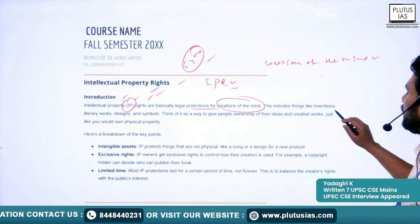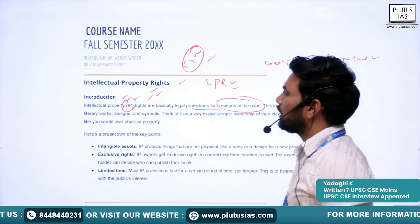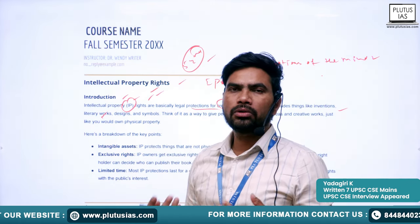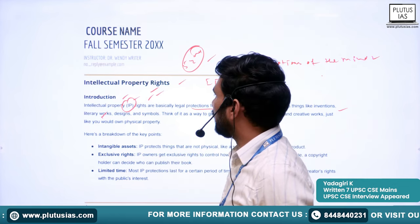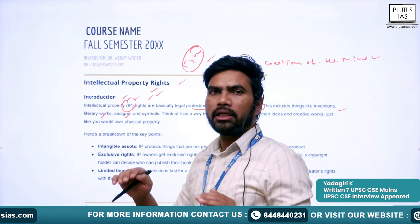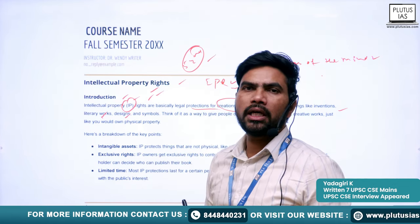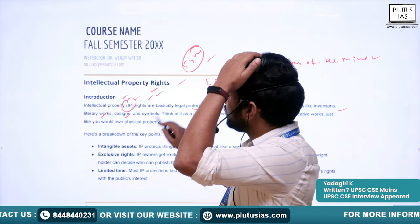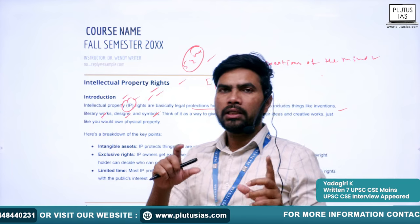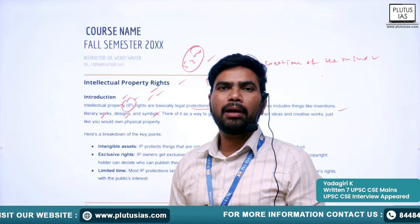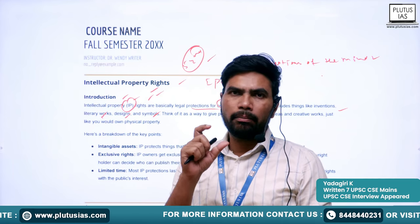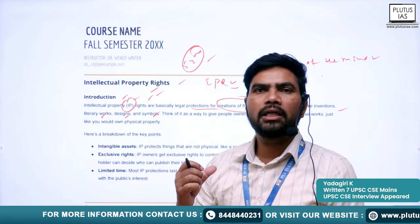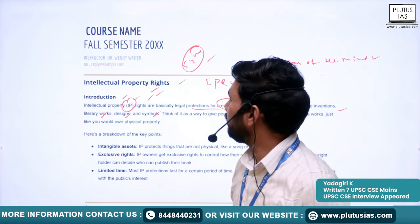These include inventions, literary works — like novels and books — designs used in industrial processes, and symbols developed for separating one brand from another. Recognition and protection will be given for these kinds of creations.